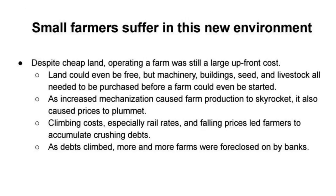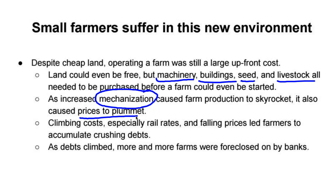Small farmers, however, ended up suffering in this new environment. Despite cheap land, operating a farm was still a huge upfront cost. Even though the land was free, things like machinery, buildings, a house and barn, seed, and livestock all needed to be purchased before a farm could get started. This increased mechanization caused farm production to skyrocket, which also led to prices plummeting. Climbing costs and plummeting prices is a recipe for disaster, leading to crushing debt, and more and more farms being foreclosed on by the banks.